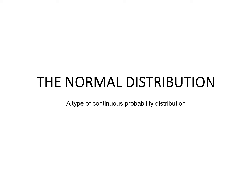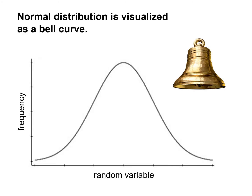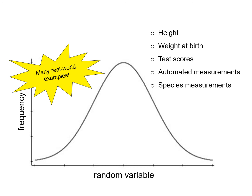We now move on to the normal distribution, which is a type of continuous probability distribution where the values of a random variable cluster around the mean. On a graph or histogram, normal distribution is characterized by a bell shape — hence a normal curve is also referred to as a bell curve. Normal distribution is also known as Gaussian distribution, named for the German mathematician Johann Karl Friedrich Gauss. It is applicable to many real-world examples including height, weight at birth, test scores, measurements in manufacturing and industry, and certain species measurements in biology.